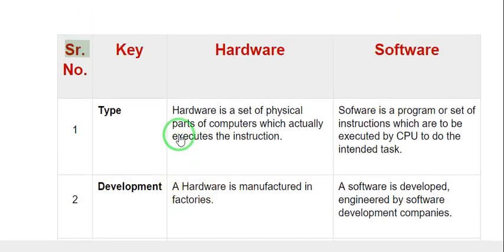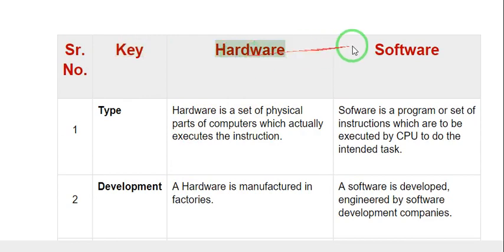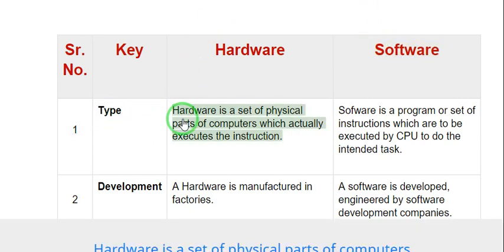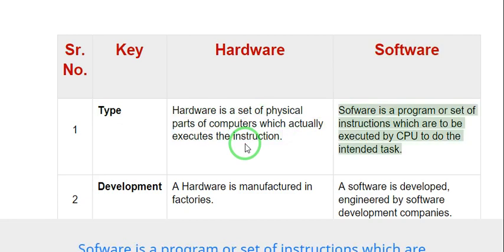Comparison table — Key differences between Hardware and Software. 1. Type: Hardware is a set of physical parts of a computer which actually executes the instruction. Software is a program or set of instructions which are to be executed by the CPU to do the intended task.